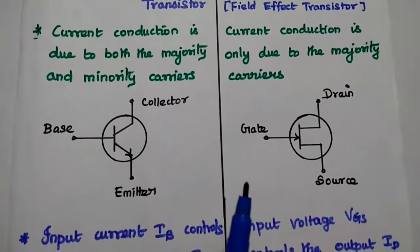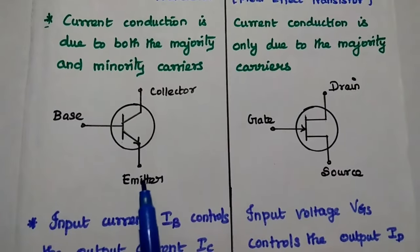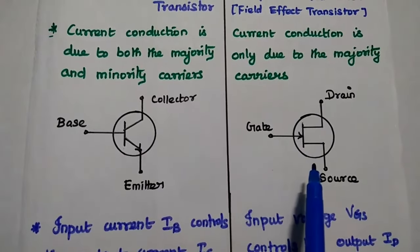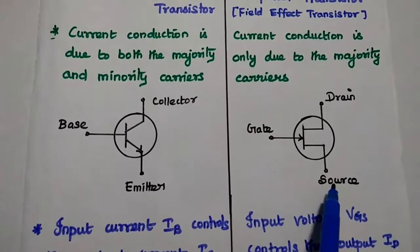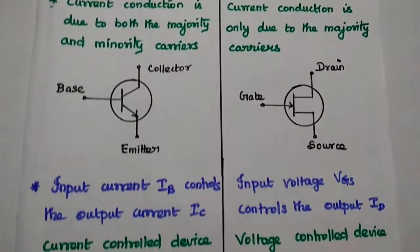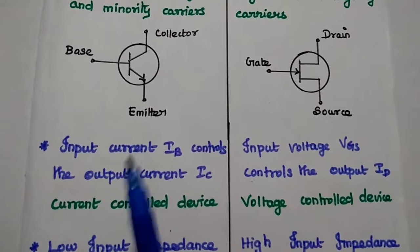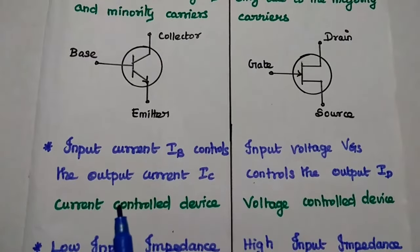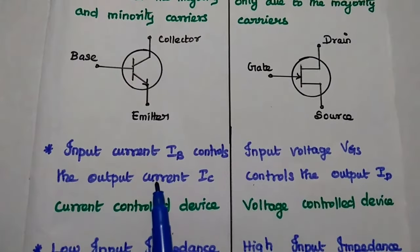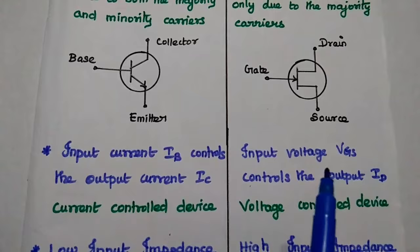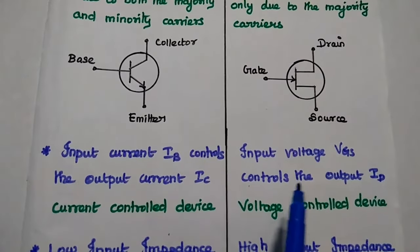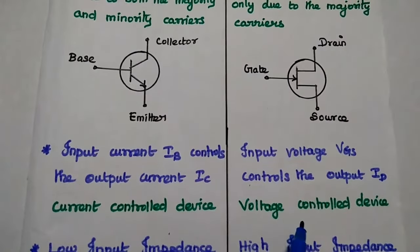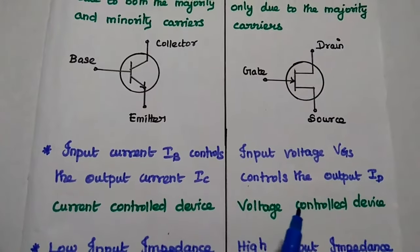The symbol of transistors: BJT is represented with three terminals — emitter, base, and collector. Similarly, FET is represented with three terminals — source, gate, and drain. In BJT, the input current, that is the base current, controls the output current, that is the collector current. Hence it is called a current controlled device. But in FET, the input voltage, that is gate-source voltage, controls the output current, that is drain current. Hence it is called a voltage controlled device.